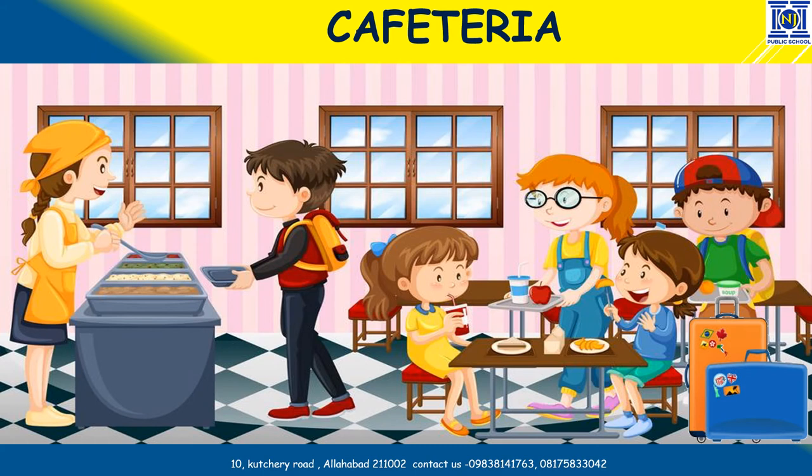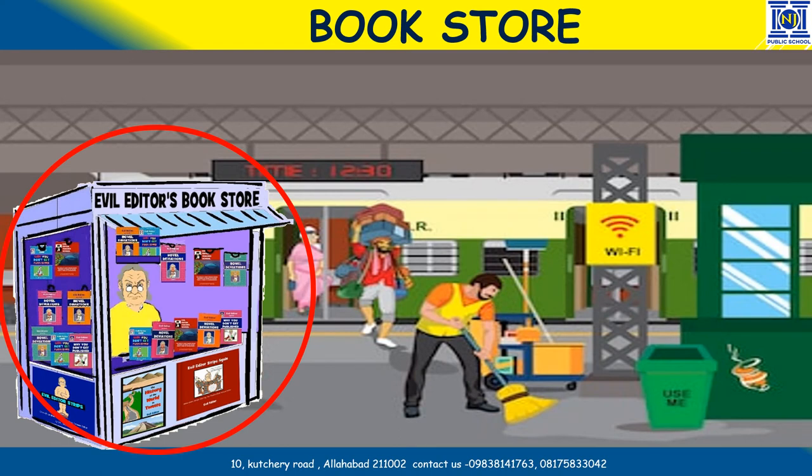Children, we also have a cafeteria at the railway station. When we are hungry, we want to eat something or get some food packed for us to eat in the train. Cafeteria is the place we go to get the food. We also have bookstores at the railway station. We want to buy magazines, read some books — we can always go to a bookstore and get it.